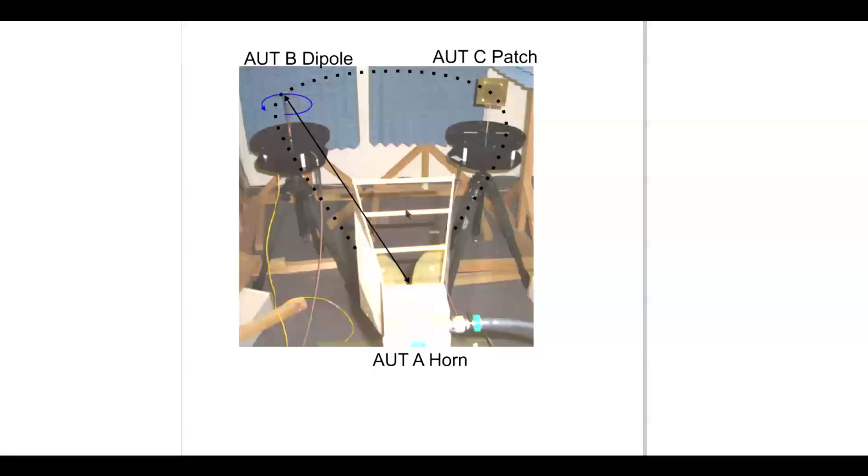In the lab we had two platforms and one reference horn. On platform B we used a Diamond Engineering dipole. On platform C we used a Diamond Engineering patch. And finally on platform A we had a reference horn which was centered midway between the median of the two other platforms.